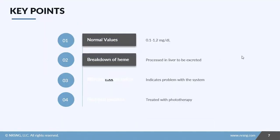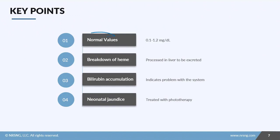Let's recap. Our normal values for total bilirubin are going to be 0.1 to 1.2 milligrams per deciliter. Remember that bilirubin is involved in the breakdown of heme, that iron-containing component of the red blood cells, and it's processed in the liver.